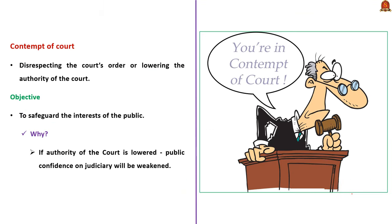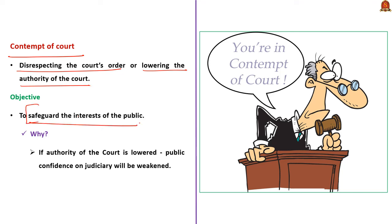Now, let us learn about contempt of court. Recently, the Madras High Court initiated suo motu contempt of court proceedings against Greater Chennai Corporation. When someone is said to be in contempt of court, it means they have disrespected the court's order or lowered the authority of the court. The objective behind contempt of court is to safeguard the interest of the public — because if the authority of court is lowered, public confidence in the administration of justice will be weakened. The concept of contempt of court is necessary for the judiciary to function smoothly.